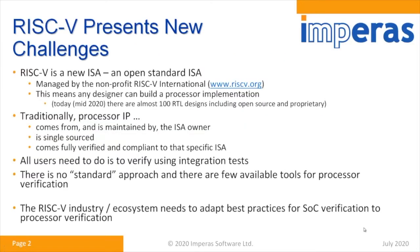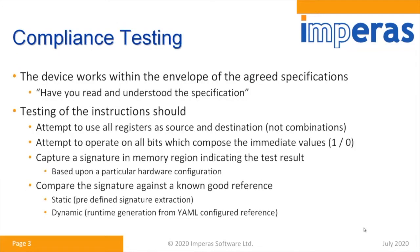RISC-V presents new challenges. It's a new ISA, it's an open standard, and the challenge is that lots and lots of people will design their own RTL. Traditionally with an ISA you have one vendor, and they would make sure they designed it correctly to the standard, verify it, and ensure it's fully compliant. With RISC-V there's no standard approach, and what we have to do is learn from the way industry has done ISS verification and apply that to processor verification.